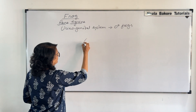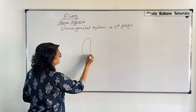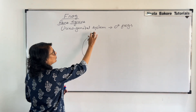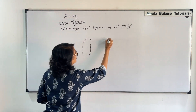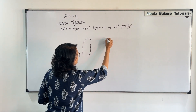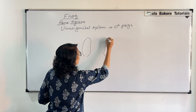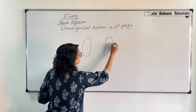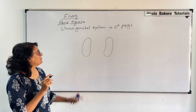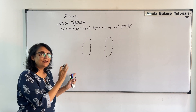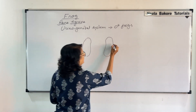Here we will be drawing the bean-shaped kidneys because we are showing the urinal and genital system. This is one kidney, this is the other one — slightly bean-shaped and elongated. In one kidney, we will be drawing the internal structure. So these are the kidneys.